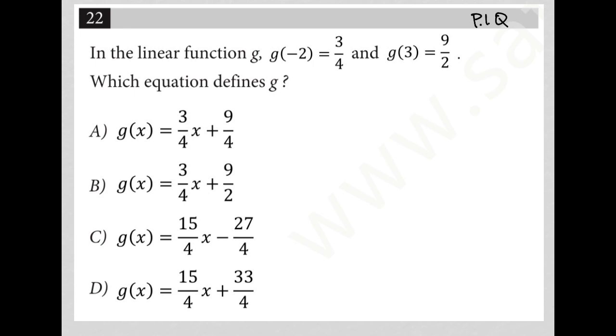The information provided here is that when x, or let's write it this way, since g of negative 2 equals 3 fourths, that means that when x equals negative 2, g of x equals 3 fourths, and we're also told that g of 3 equals 9 halves, which means when x equals 3, g of x is equal to 9 halves.